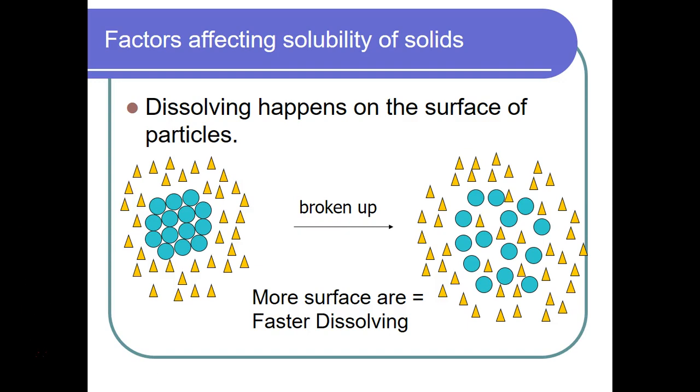So remember the three things that have an effect for solids are going to be temperature, agitation, and surface area. As temperature increases, the rate of dissolution for solids is going to increase. As you stir, as you mix, that's going to allow for solids to dissolve faster. And then the last one, increasing surface area, is going to increase the speed of dissolving.